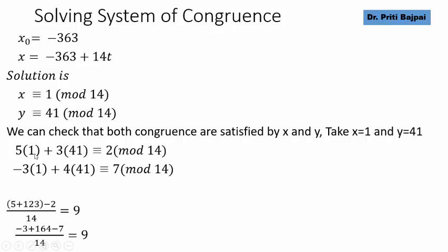5 into 1, we have put x as 1, we have put y as 41 in the first congruence. In the second congruence, we see that 5 plus 123 minus this 2 is divisible by 14. It gives us 9 and in the second congruence, minus 3 plus 164 minus 7 is divisible by 14 again and it gives us 9. So our system is solvable.